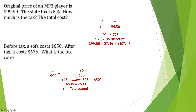For the sofa problem: before taxes it costs 650, after it costs 676 — what's the tax rate? The tax amount is 676 minus 650 equals 26 dollars. Setting up: n over 100 equals 26 over 650, the original cost. Cross multiplying gives 650n equals 2600. Dividing by 650 gives n equals four percent tax. The problem doesn't ask for the new price, so that's the complete answer. That's the end of all our percent problems for the day.